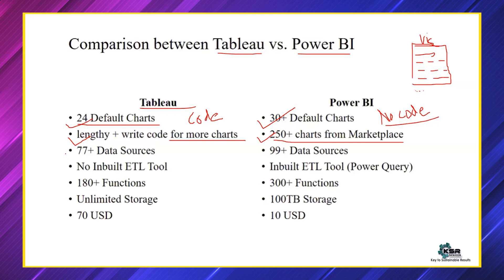Moving to the third difference: Tableau has 77 different data source connectors, whereas Power BI has around 100 plus — now reaching around 110 different data sources with the introduction of multiple Azure services. A data source is simply where you get your data from for reporting — cloud, local systems, APIs, and more. Power BI gives you over 100 source connections compared to Tableau's 77 to 80.